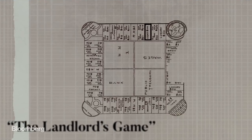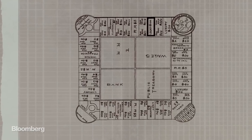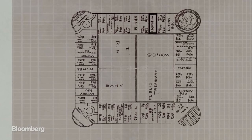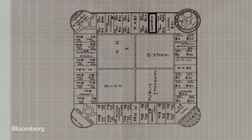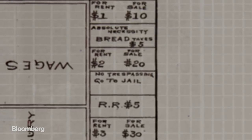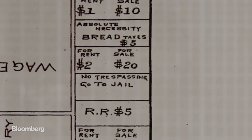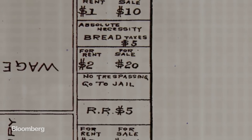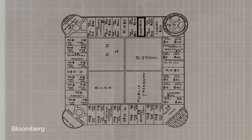The Landlord's Game, as it was known, became popular, particularly among Quakers, with each person drawing the board by hand onto tablecloths or fabric and modifying the rules.